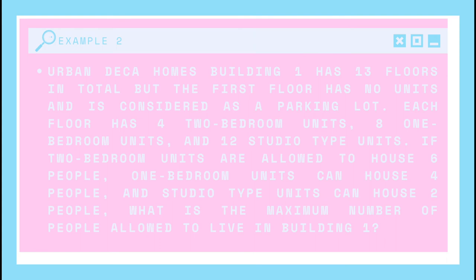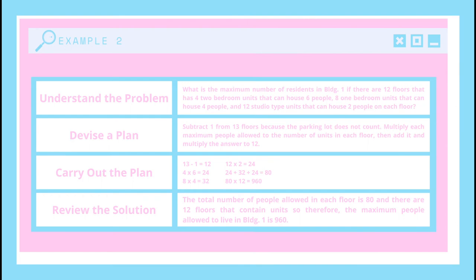Let's try to solve this problem. We will use the table again. To understand the problem, here is how I will restate it: What is the maximum number of residents in Building 1 if there are 12 floors that have 4 two-bedroom units that can house 6 people, 8 one-bedroom units that can house 4 people, and 12 studio-type units that can house 2 people on each floor? I removed the unnecessary information so that we can only use the given data needed to solve the problem. Then I will devise a plan: subtract 1 from 13 floors because the parking lot does not count, multiply each maximum number of people allowed by the number of units on each floor, then add them, and multiply the answer by 12.